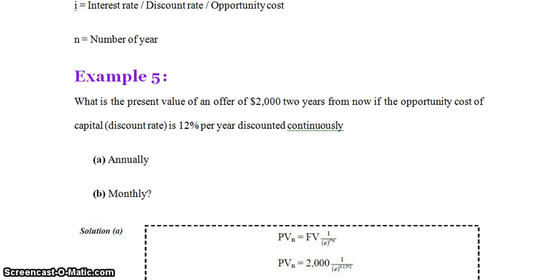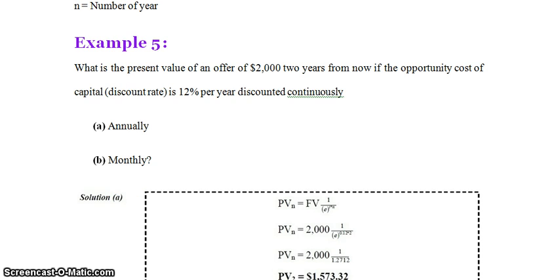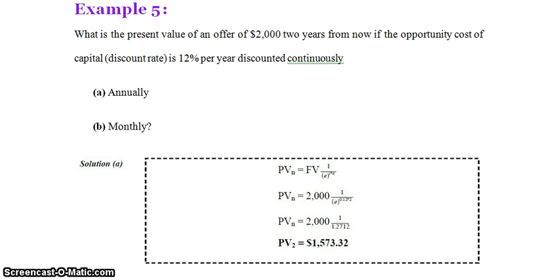What is the present value of an offer of Rs. 2000 two years from now if the opportunity cost of capital, that is the discount rate, is 12% per year discounted continuously? We have to calculate both annually as well as monthly. For the annual solution: PV(n) = Future Value × (1 / e^(i×n)) = 2000 × (1 / e^(0.12 × 2)).